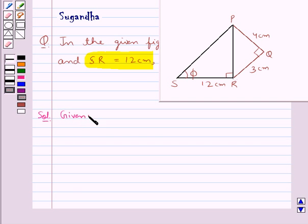We are given PQ equal to 4 cm, QR equal to 3 cm, SR equal to 12 cm, and we have to find cot φ.